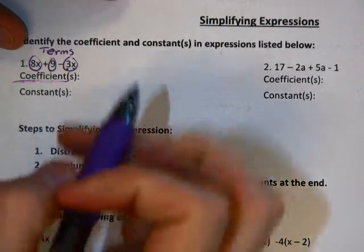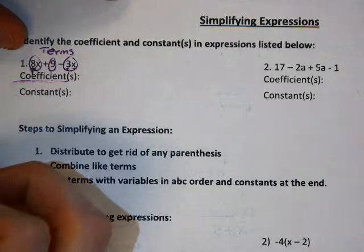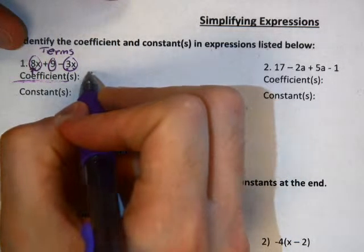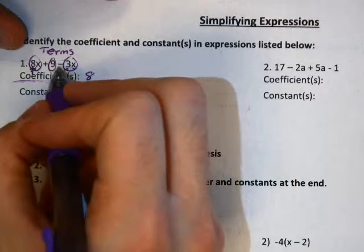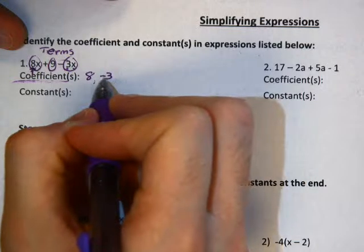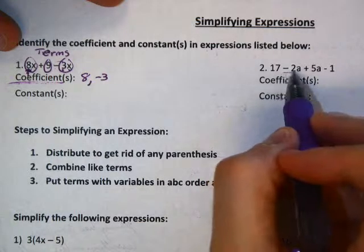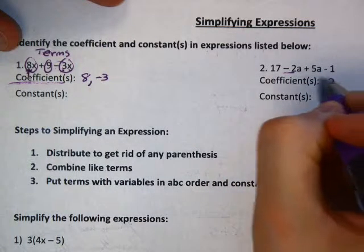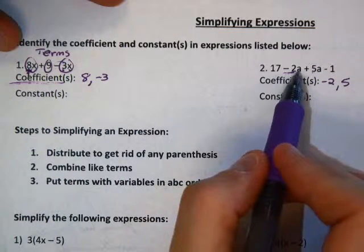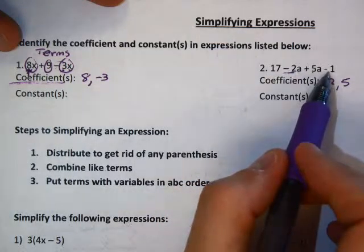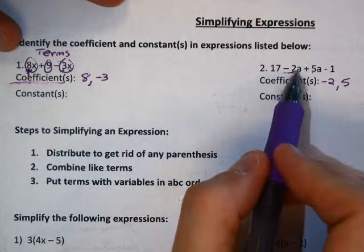Now coefficient. Coefficient refers to the number that is in front of a variable. That is a coefficient. So our coefficients here are 8, and the sign always goes with the coefficient. So negative 3 is going to be our coefficient here. Let's look over here at this other one before we move on to constants. Our coefficients are going to be negative 2 and positive 5. So those are our coefficients. Those are numbers in front of variables. 17, negative 1. Those aren't going to count as coefficients because they are not next to or being multiplied by a variable.